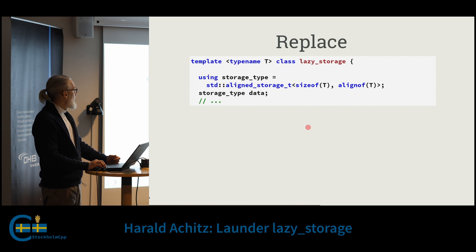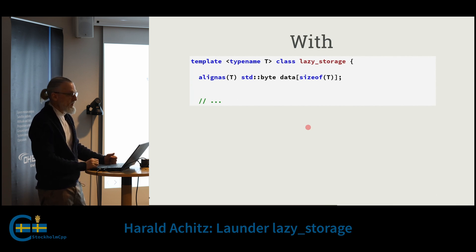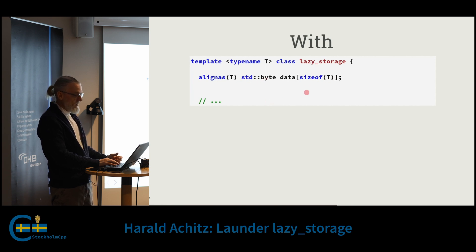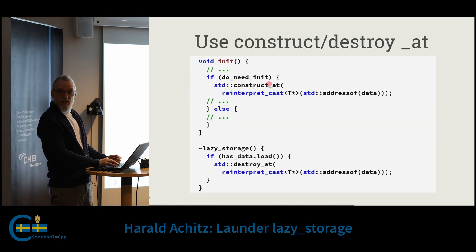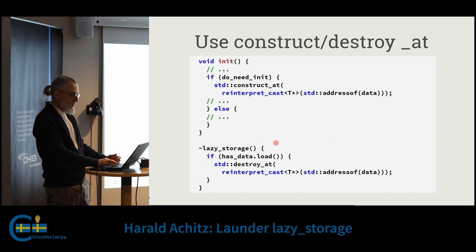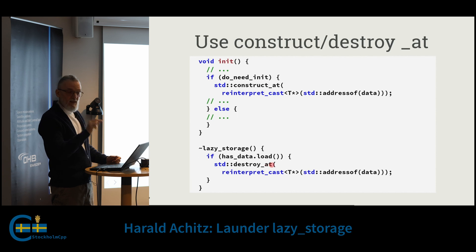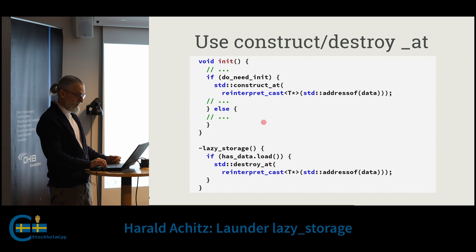This means I need to replace aligned_storage_t with the implementation of aligned_storage itself, which is basically a blob storage using std::byte — and there are not that many reasons to use std::byte, so this is cool. We have the alignment and the size, so we are good. And what I also found was there is a construct_at function and a destroy_at function, which means you don't need placement new anymore and you don't need the weird syntax where you call the pointer then the destructor. This is pretty neat, and it came with C++20.